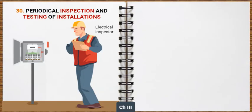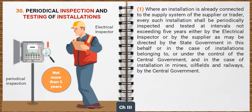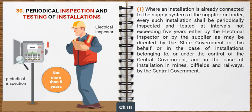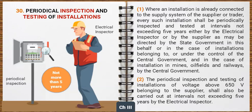Now let's learn the general safety requirements for periodical inspection and testing of installations. Where an installation is already connected to the supply system of the supplier or trader, every such installation shall be periodically inspected and tested at intervals not exceeding 5 years, either by the electrical inspector or by the supplier as may be directed by the state government. In the case of installations belonging to or under the control of the central government, and in the case of installations in mines, oil fields and railways, inspection shall be carried out by the central government. The periodical inspection and testing of installations of voltage above 650 volts belonging to the supplier shall also be carried out at intervals not exceeding 5 years by the electrical inspector.